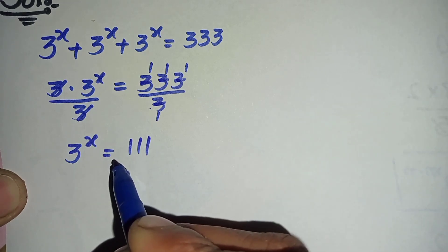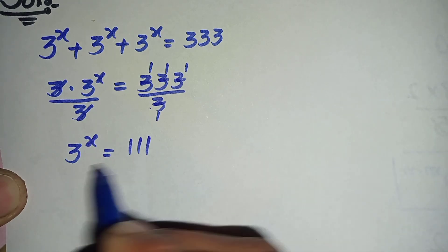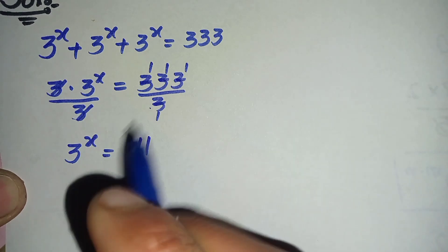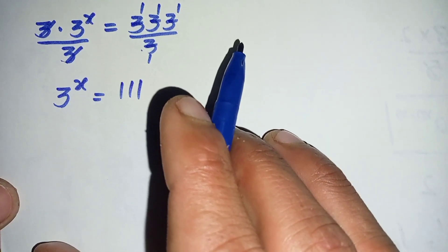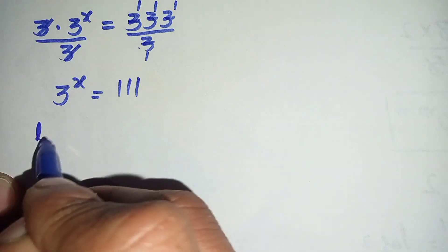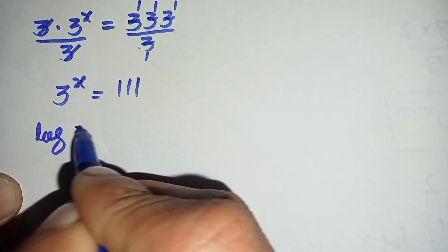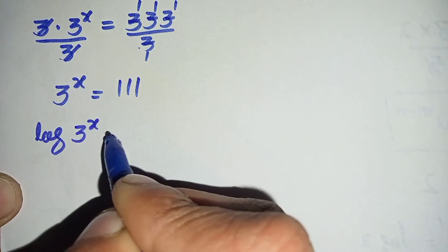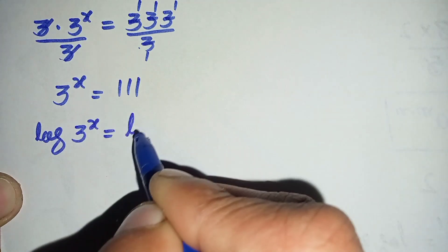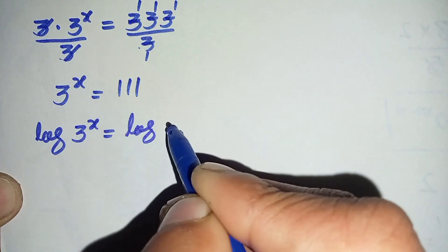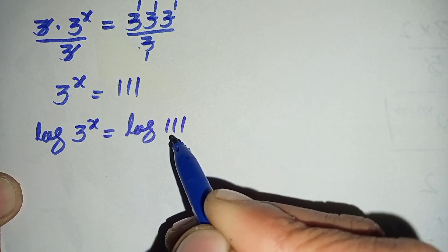Now how to solve this equation further? Here we will take a common log on both sides. So log of 3 raised to power x is equal to log of 111.